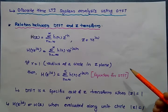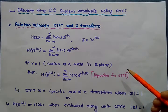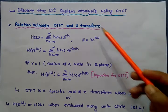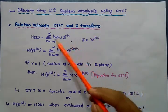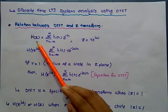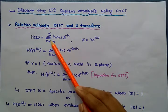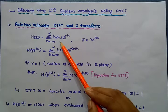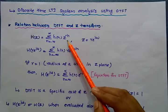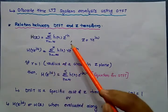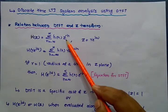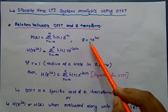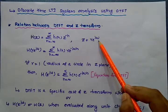First of all, we have to discuss the relation between DTFT and Z-transform. We know that the equation for Z-transform is: H(Z) = summation from N equal to minus infinity to infinity of H(N) times Z raised to minus N, where Z is a complex number that can be represented as Z = R e raised to j omega.